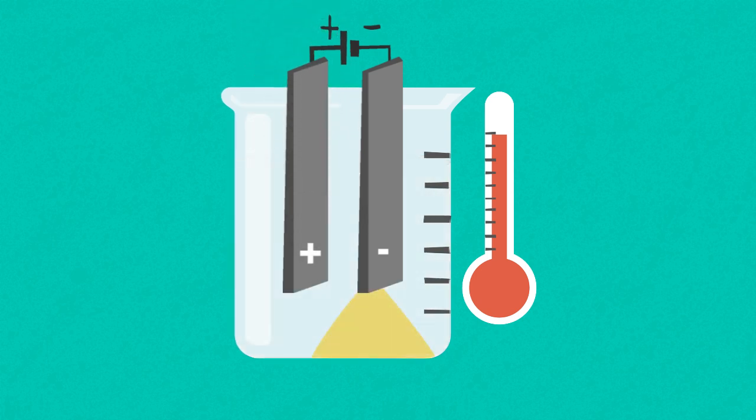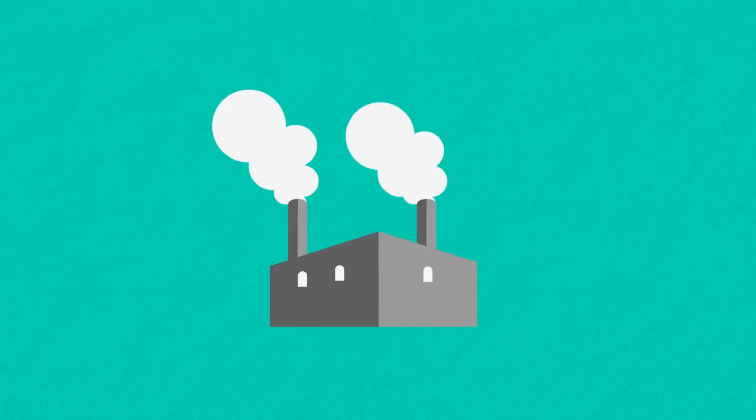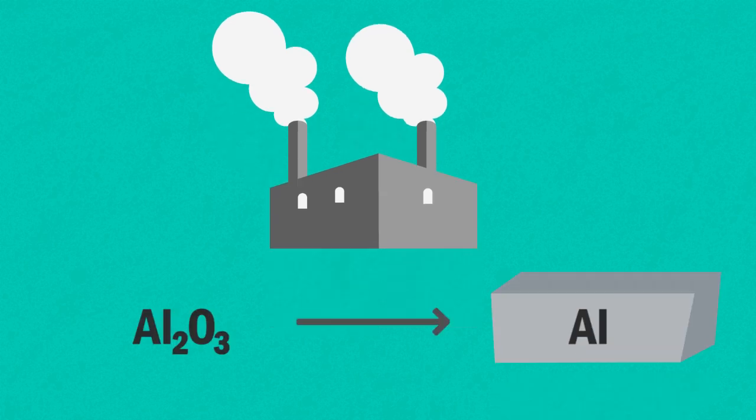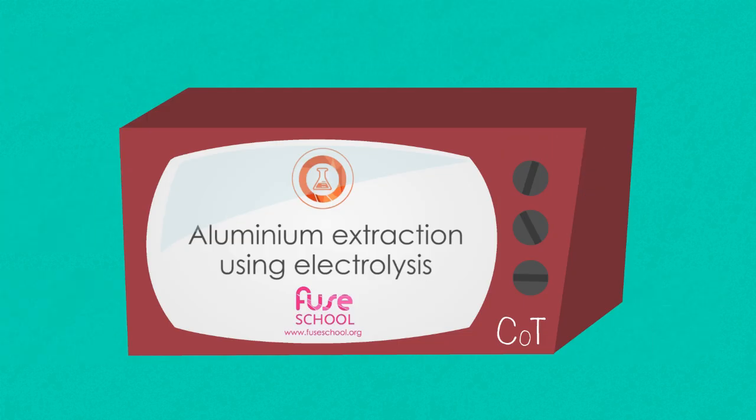And the process is actually quite useful and is used a lot in industrial processes. One such example is the industrial extraction of aluminium from aluminium oxide. And it's explained in more details in our lesson, Aluminium Extraction Using Electrolysis.